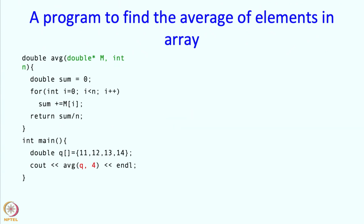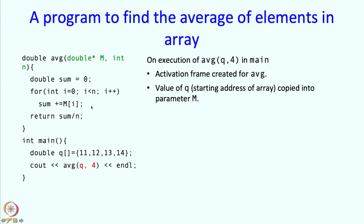So when we execute this average of q4, what is going to happen? Well, an activation frame will be created for average and the value of q which is the starting address of this array will get copied into the parameter m.